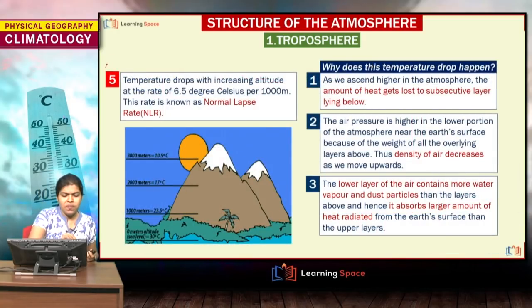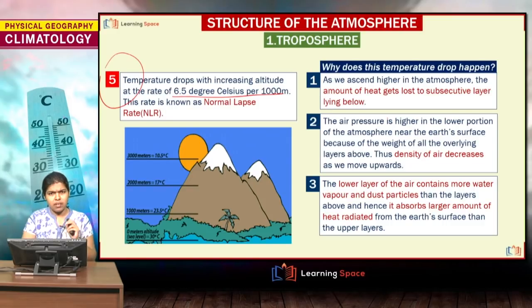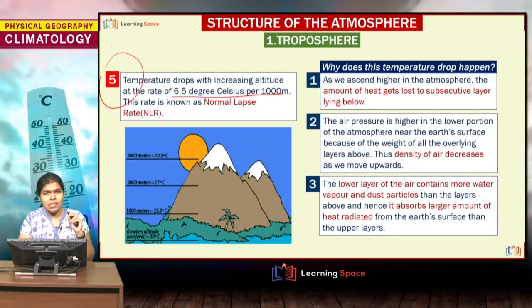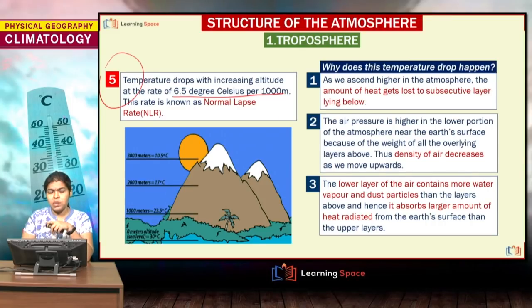Now for the fifth characteristic of the troposphere: temperature drops with increasing altitude at the rate of 6.5 degrees Celsius per 1,000 meters. This rate is known as the Normal Lapse Rate, or NLR. This is an important term that will come up throughout the entire climatology module. The NLR applies only to the troposphere.